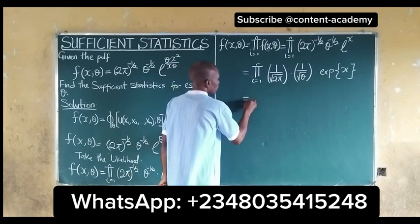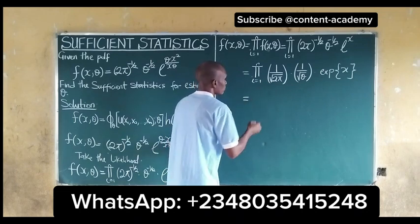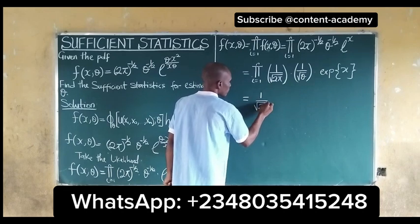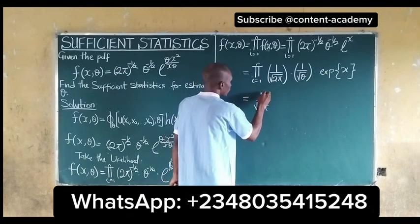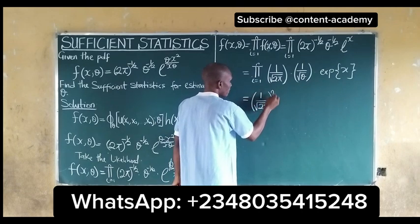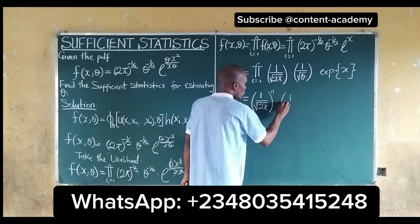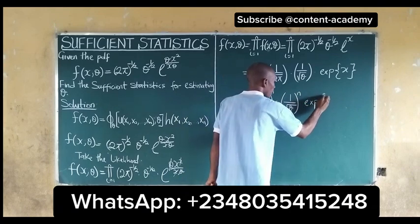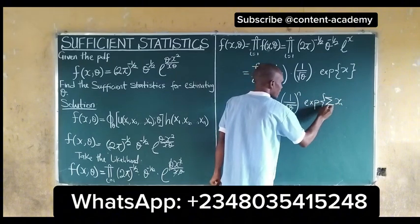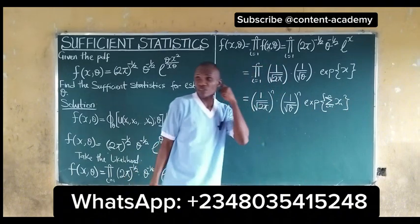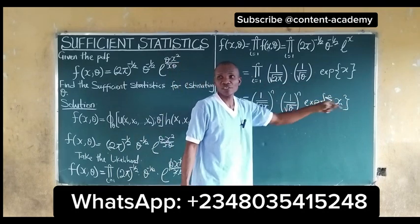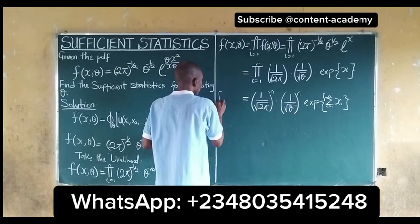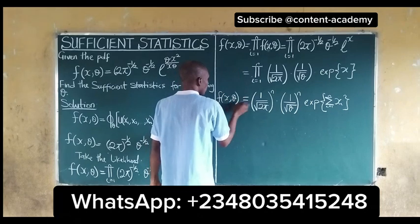If we take the product sum of this function, we get: [1/√(2π)]^n multiplied by [1/√θ]^n multiplied by exp(summation of xi, as i running from 1 to n). In our previous video I showed how we can take the product sum — you multiply all of them and take it as one. So f(x, θ) gives us this result.